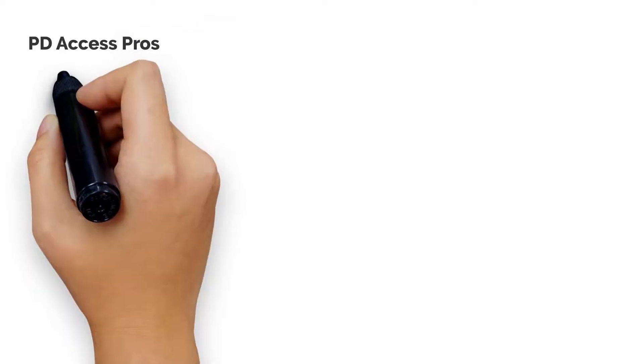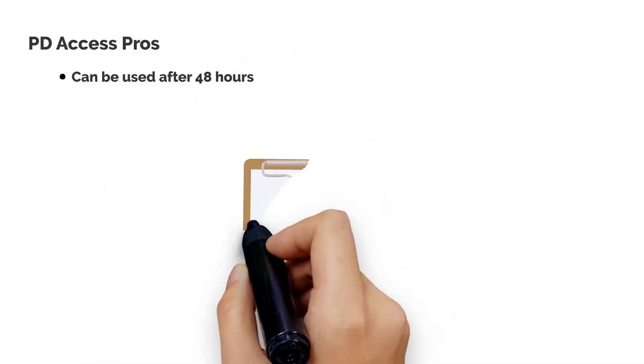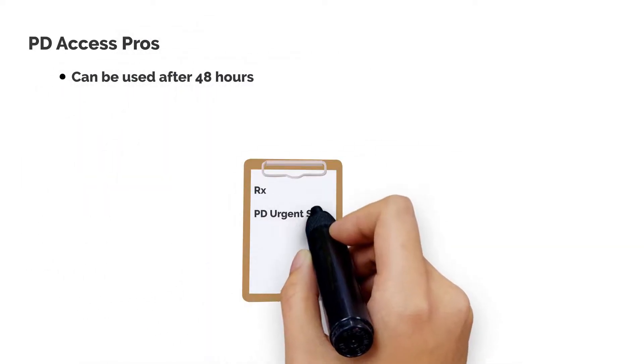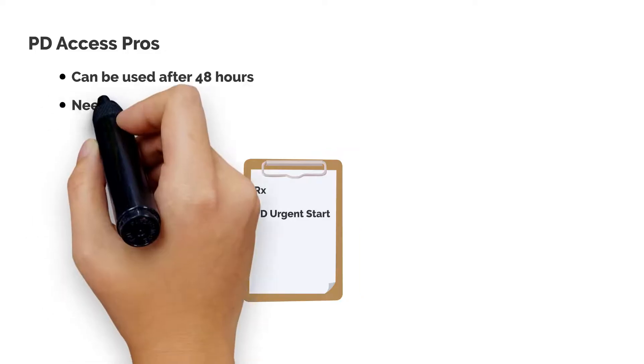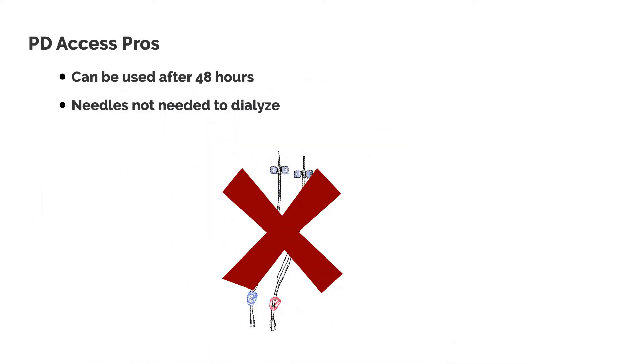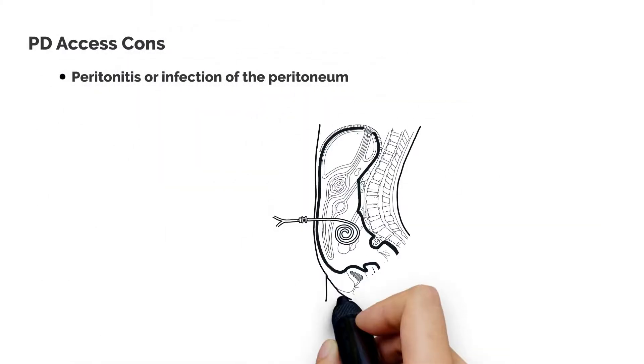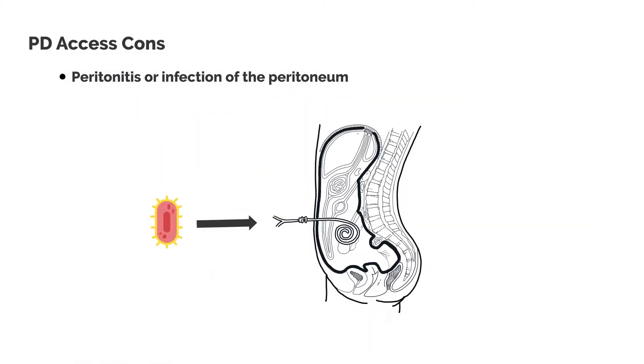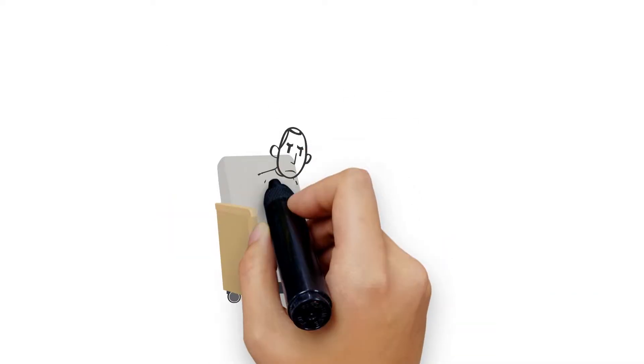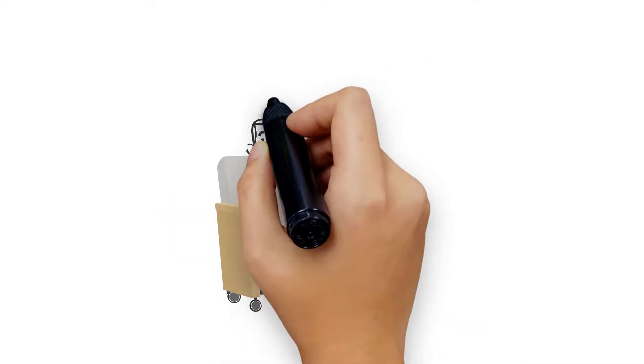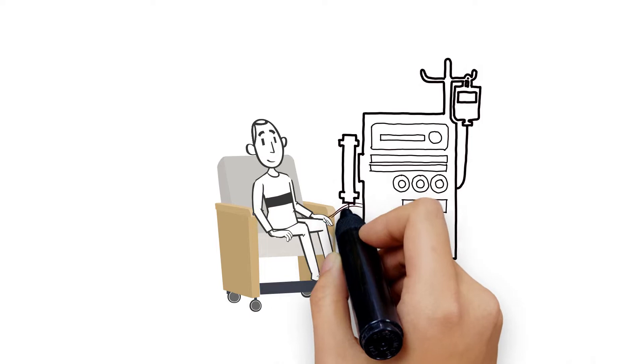The PD catheter can usually be used 48 hours after placement for urgent starts. No needles are needed to dialyze. The most common complication with PD is peritonitis, an infection of the peritoneum. If this happens frequently, patients may need to switch to hemodialysis.